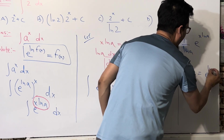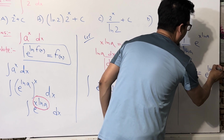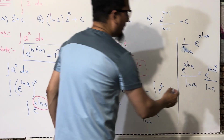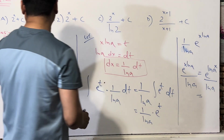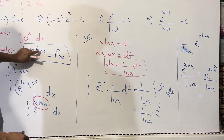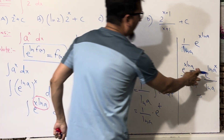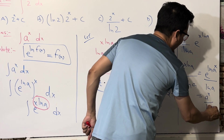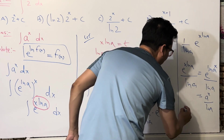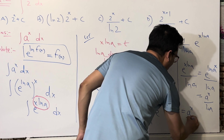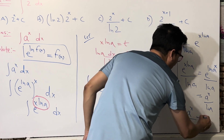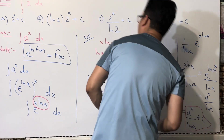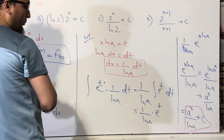This can be rewritten: e^(x · ln a) equals a^x because e and ln cancel. So the final answer is a^x / ln a + C. That is the integration of a^x. So in brief: ∫a^x dx = a^x / ln a + C.